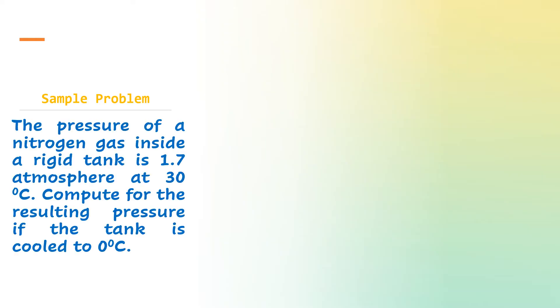Let us try a sample problem. The pressure of a nitrogen gas inside a rigid tank is 1.7 atmosphere at 30 degrees Celsius. Compute for the resulting pressure if the tank is cooled to 0 degrees Celsius.